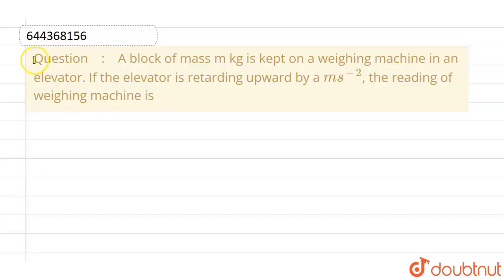Hello everyone. If we talk about this question, a block of mass m kg is kept on a weighing machine in an elevator. Now if the elevator is retarding upward by a meter per second square acceleration, the reading of the weighing machine is.